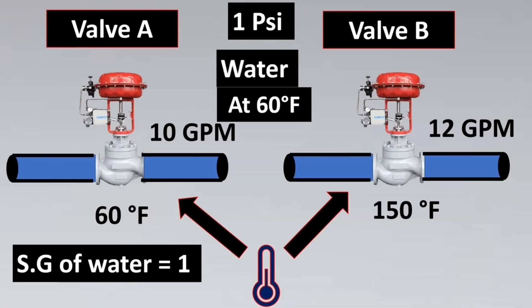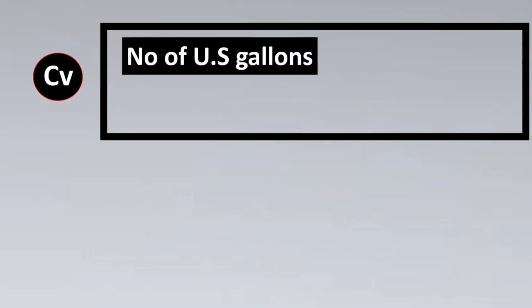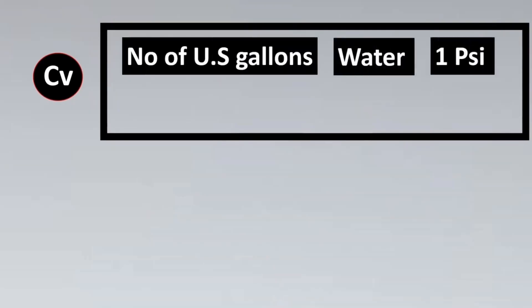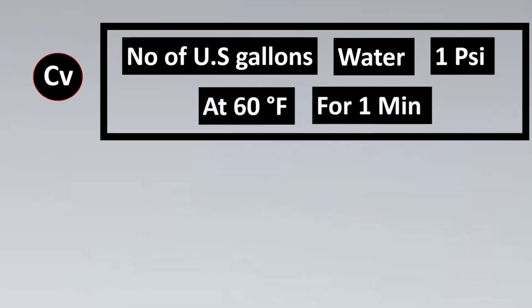We have three standard parameters: the psi drop is 1 psi, water is the fluid, and temperature is 60 degrees Fahrenheit. The definition of CV is the number of US gallons of water that can flow through a valve with 1 psi pressure drop at 60 degrees Fahrenheit for 1 minute.